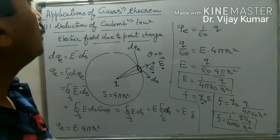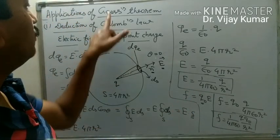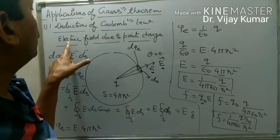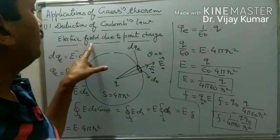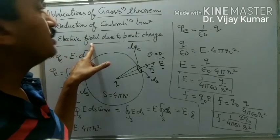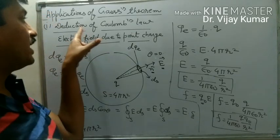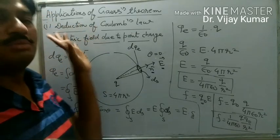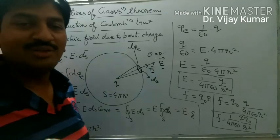By the first application of Gauss theorem, we can derive the formula of electric field due to a point charge and we can also derive Coulomb's law. Thank you.